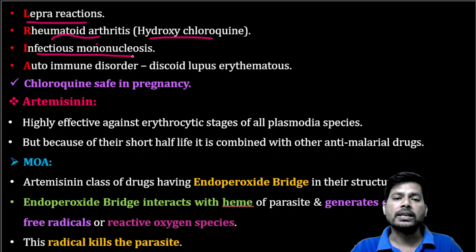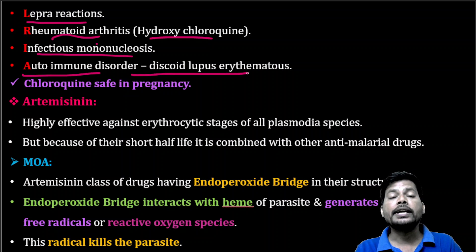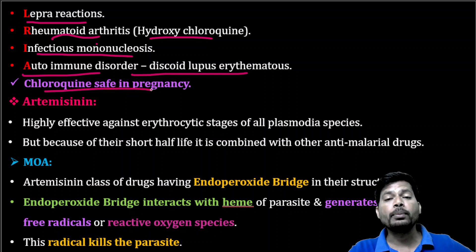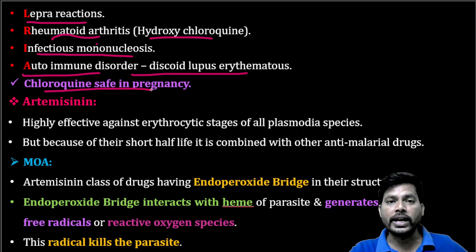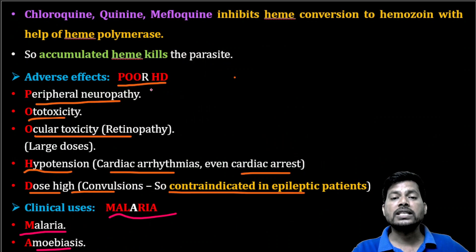Chloroquine is also used in autoimmune disorders like discoid lupus erythematosus, which is related to the immune system and blood. Chloroquine is safe in pregnant women — if a pregnant woman has malaria, she can use chloroquine, similar to quinine — but there should be monitoring and it should only be taken with a doctor's prescription.